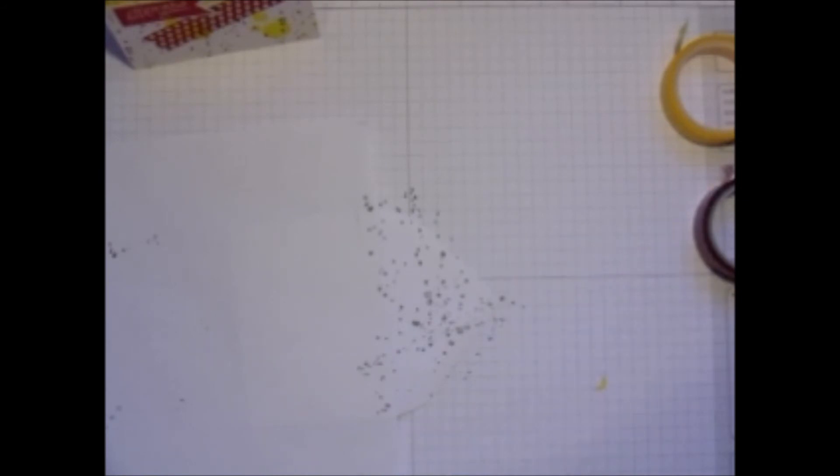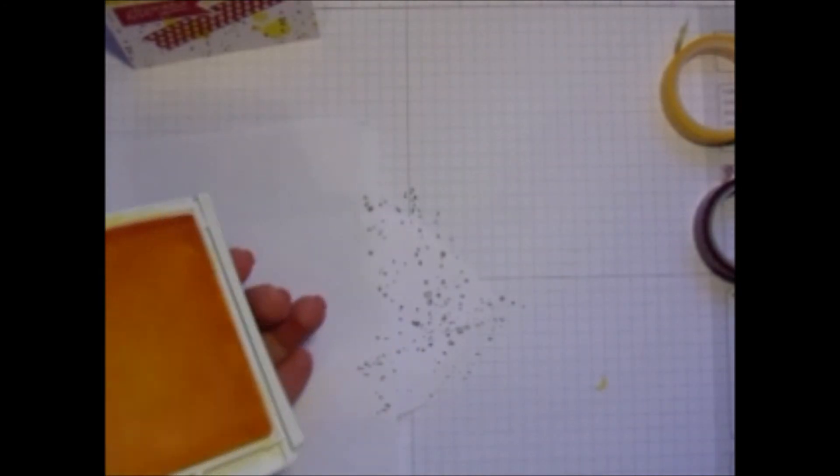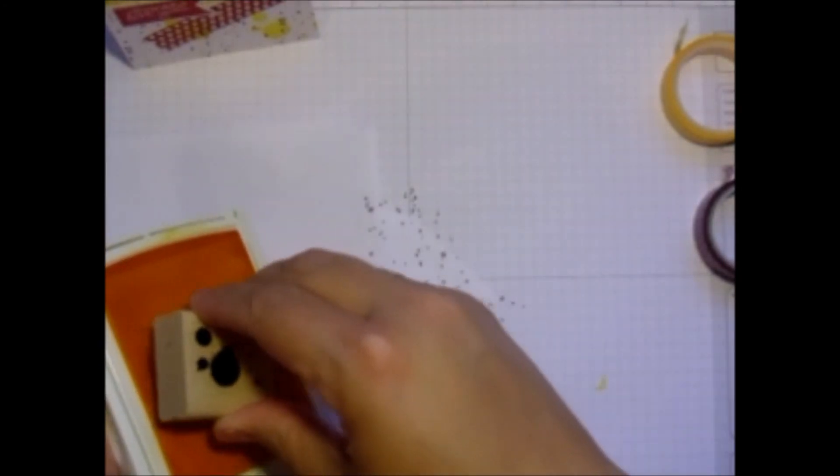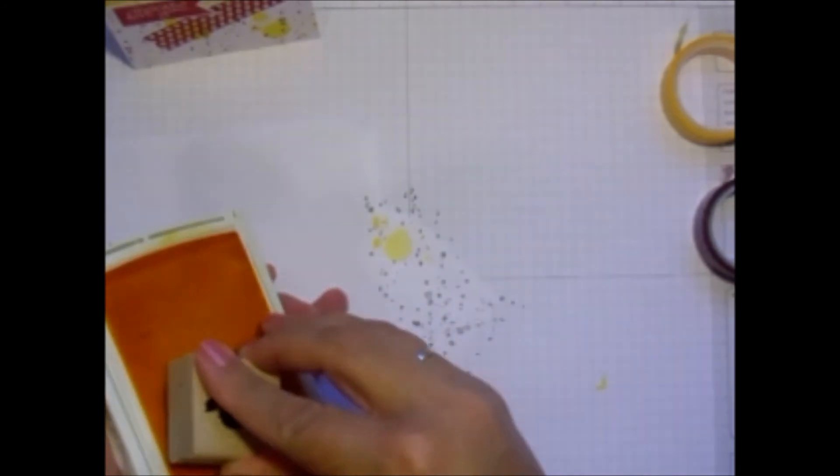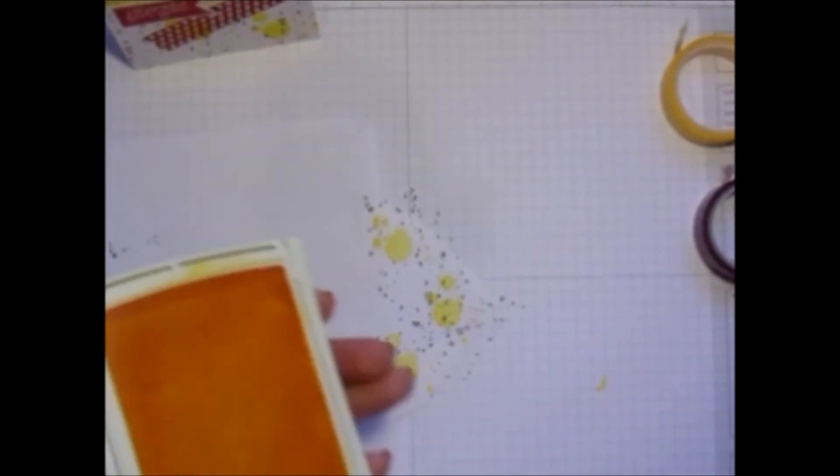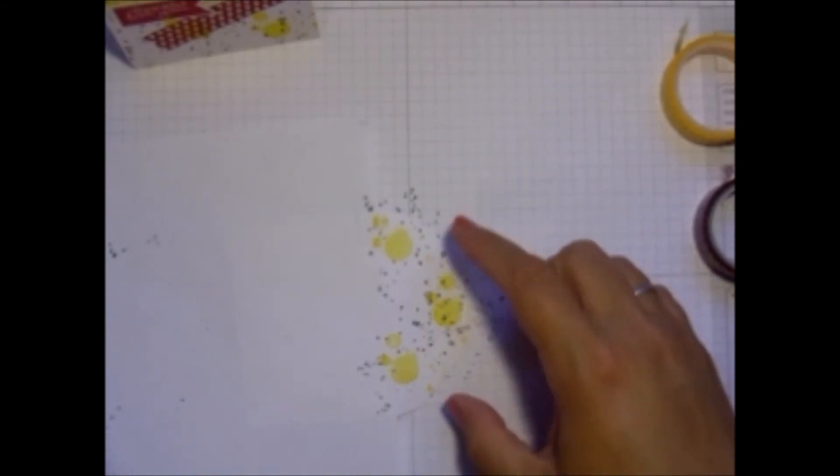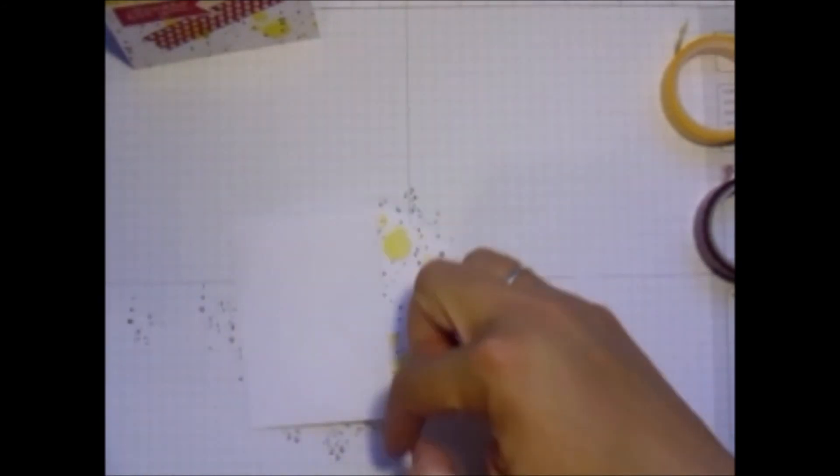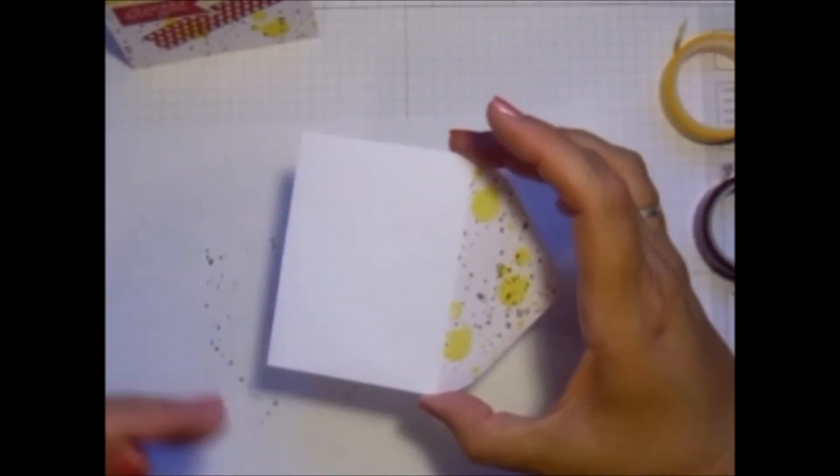Then I'm going to bring in a little bit of that Daffodil Delight again. And then of course as you know with masking, once I remove this piece, there's not going to be anything stamped there.